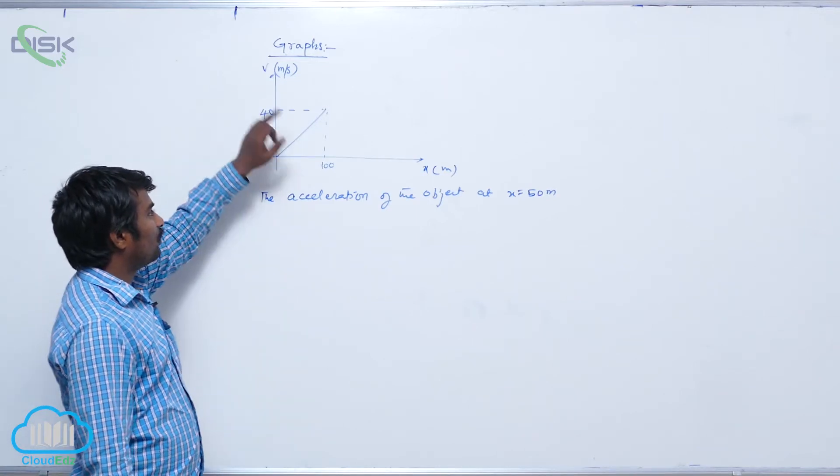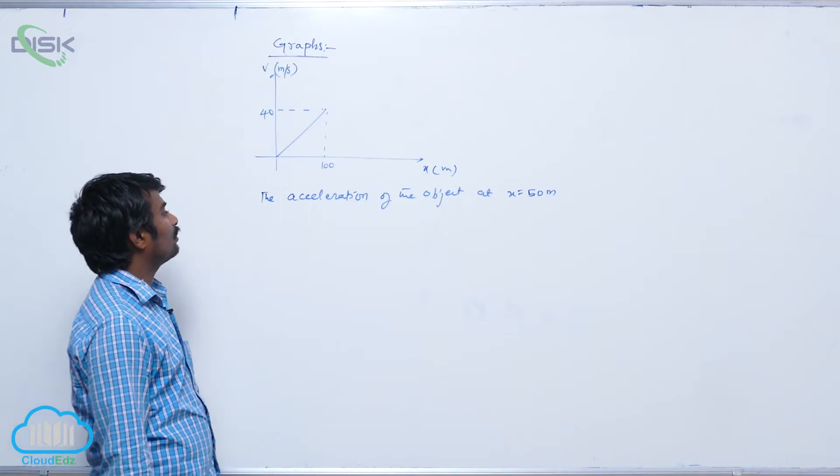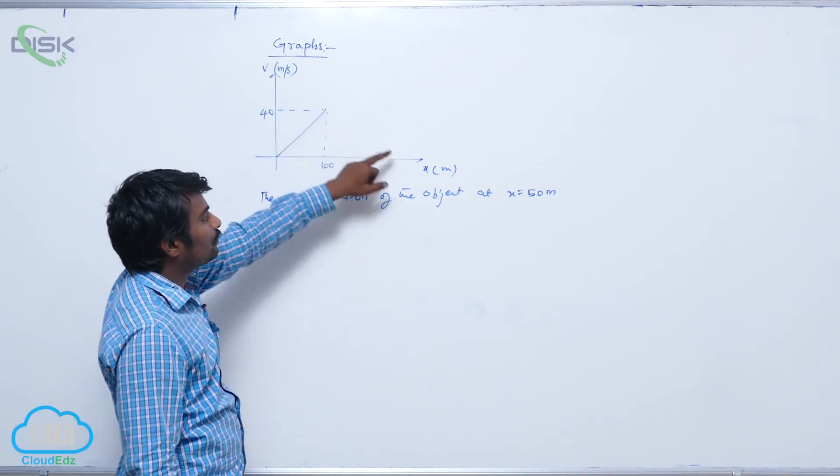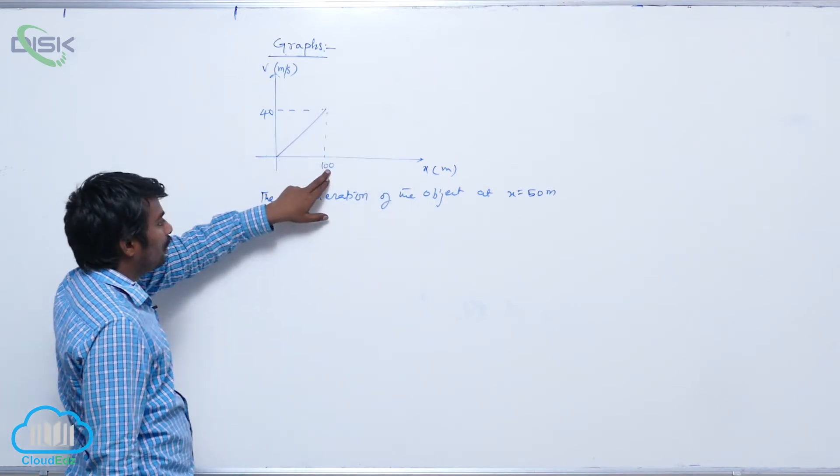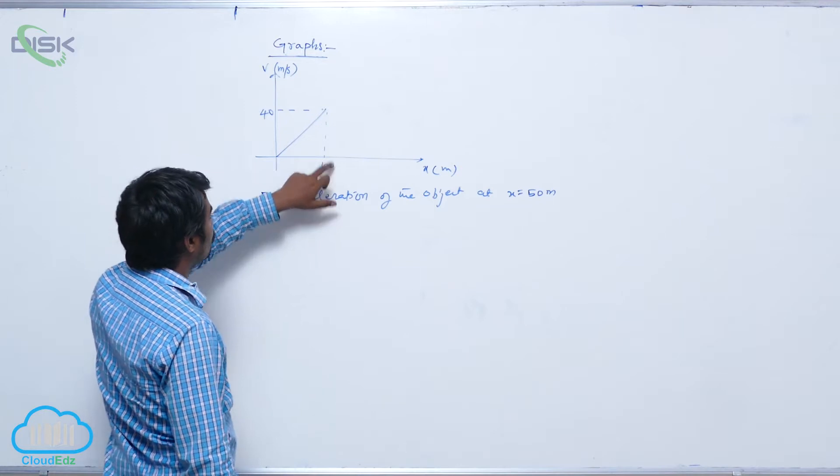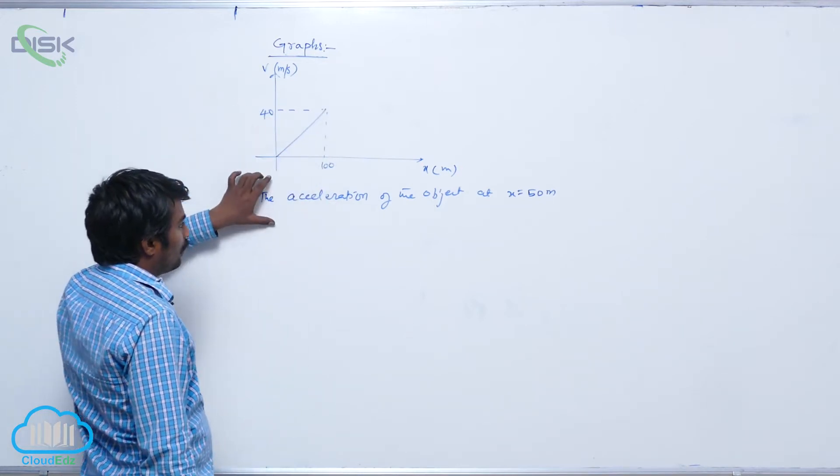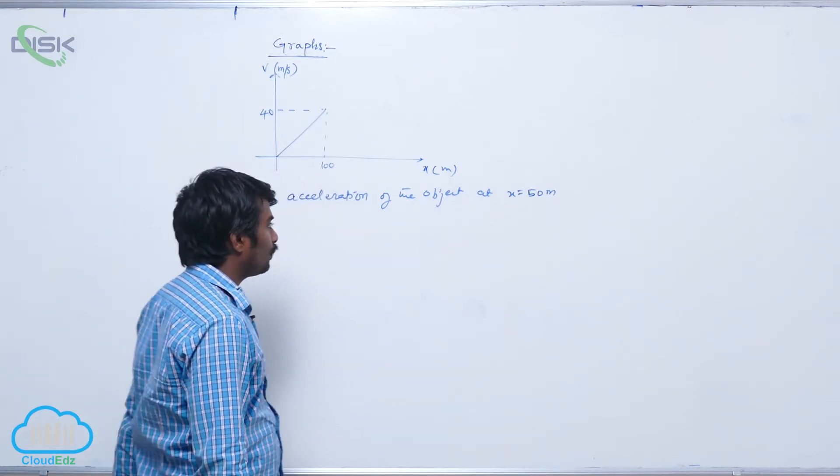A Vx graph of an object moving along a straight line is given as shown in the figure. Velocity is in meters per second, distance is in meters, and at x equals 100 meters, its velocity equals 40 meters per second. Now we need to find the acceleration of the object at x equals 50 meters.